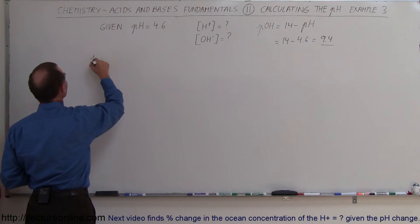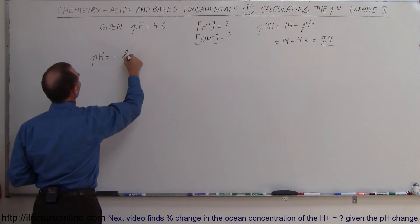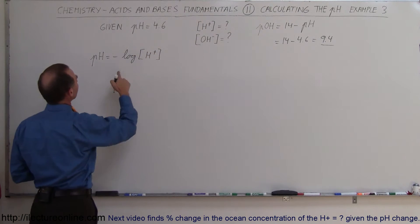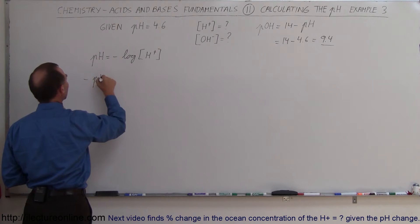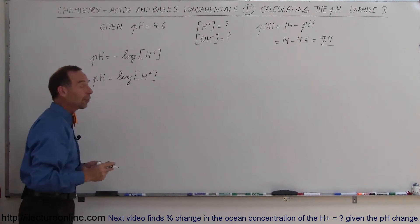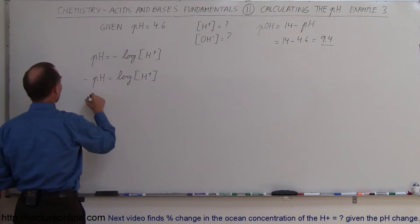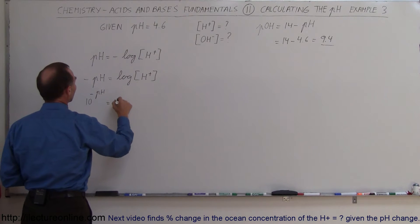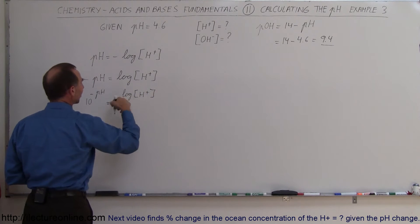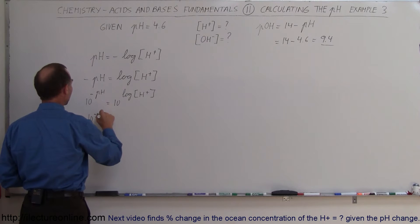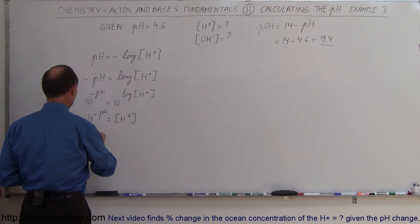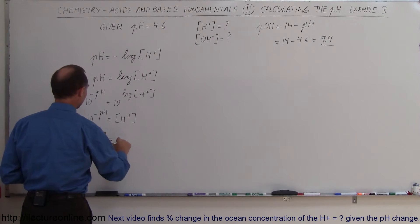To calculate the hydrogen ion concentration from pH, we use pH = -log[H⁺]. Moving the negative to the other side gives -pH = log[H⁺]. Taking the antilog of both sides, 10^(-pH) = 10^(log[H⁺]), and since the log and the base-10 exponent cancel, we get 10^(-pH) = [H⁺].